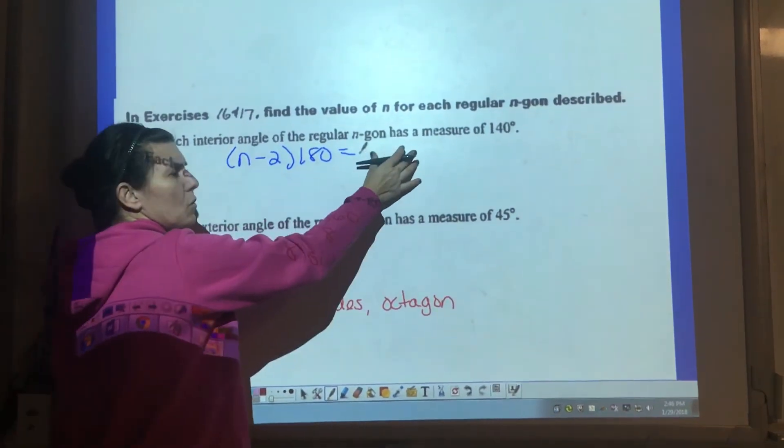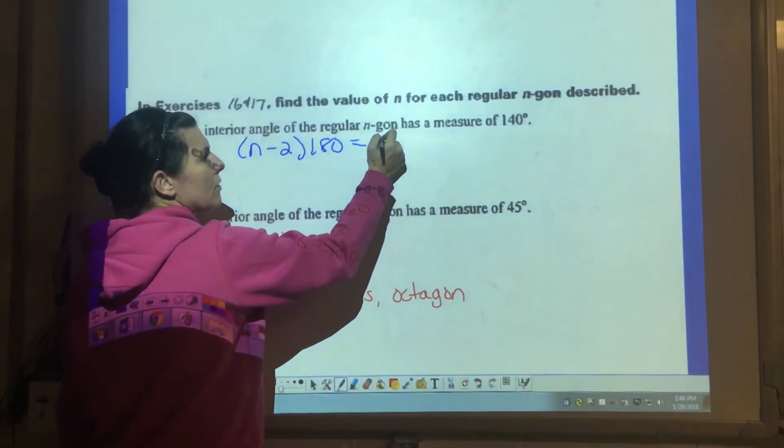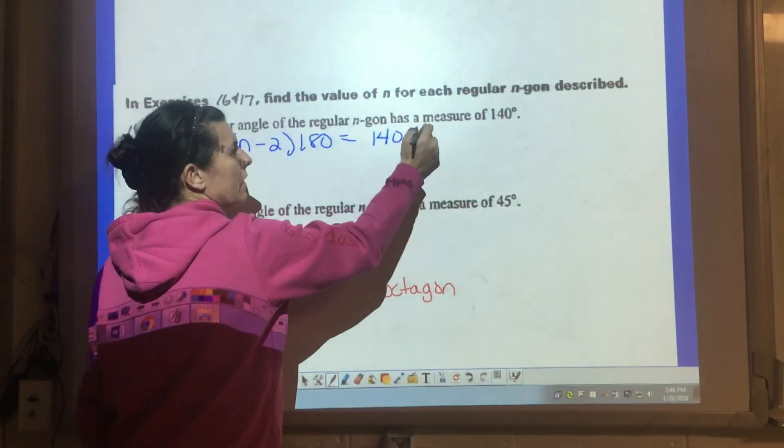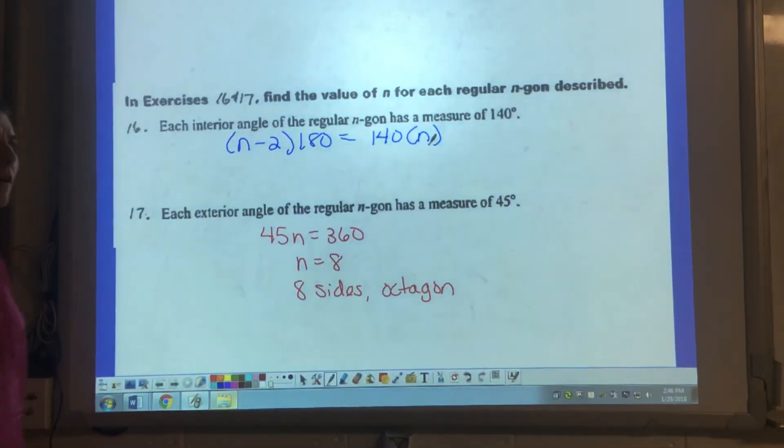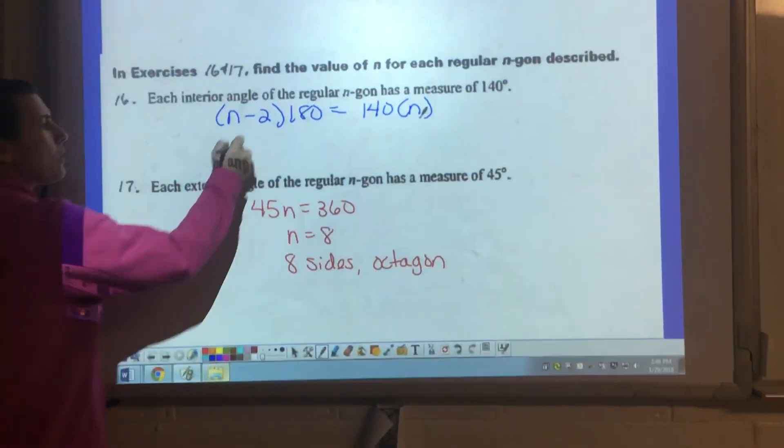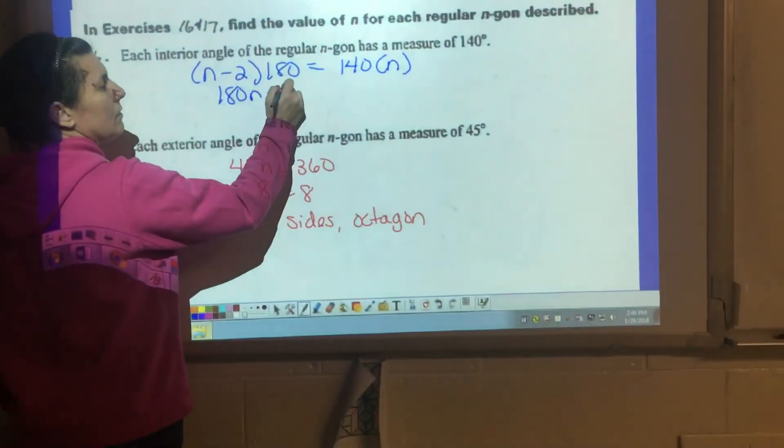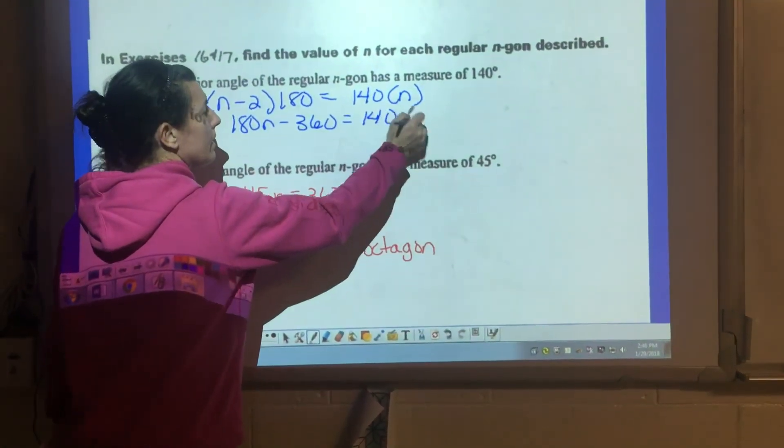But on this side, I don't know what it adds up to be, but I know each one is 140 multiplied by the number that there is. So simplifying this equation, 180N minus 360 equals 140N.